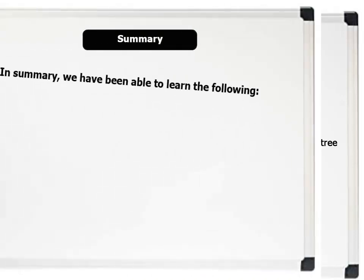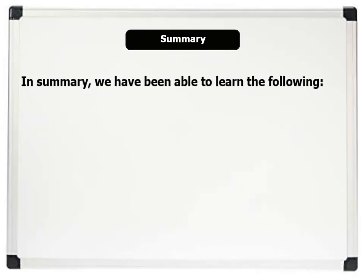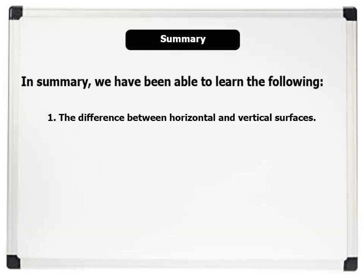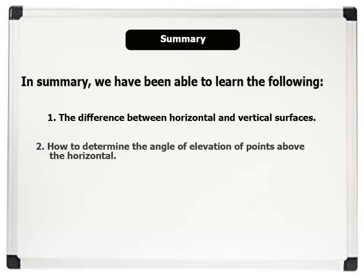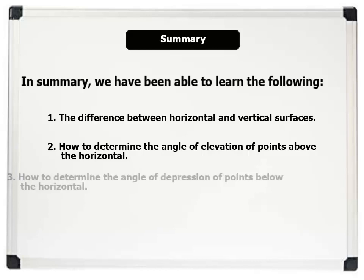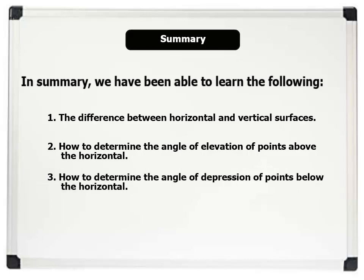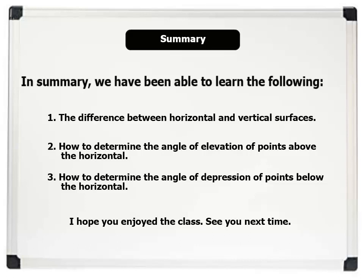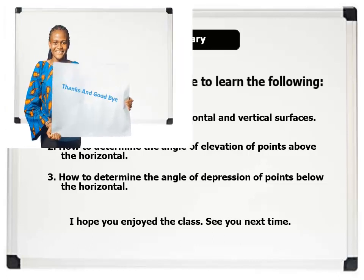In summary, we have learned the following in this lesson: one, the difference between horizontal and vertical surfaces; two, how to determine the angle of elevation of points above the horizontal; and three, how to determine the angle of depression of points below the horizontal. I hope you enjoyed the class. See you in the next lesson. Thanks and goodbye.